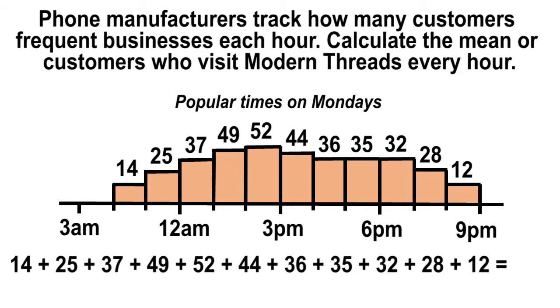We can calculate the mean by adding up the number of customers who visit each hour and then dividing by the number of data points. The total number of customers who visit Modern Threads is 364. We will divide that by 11 since there are 11 different data points. The mean number of customers who visit every hour is approximately 33.